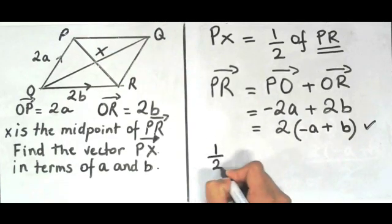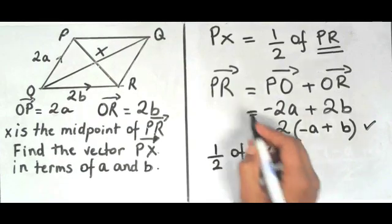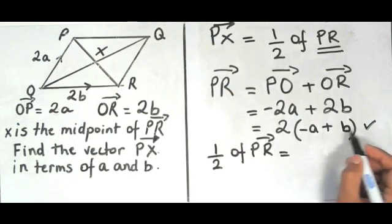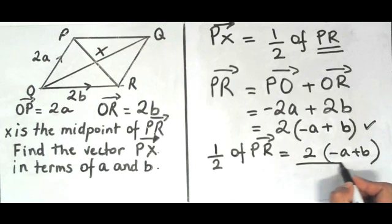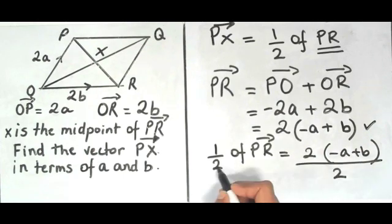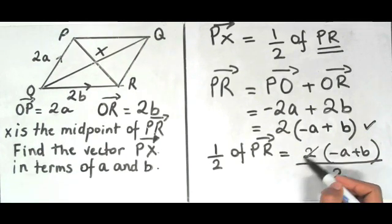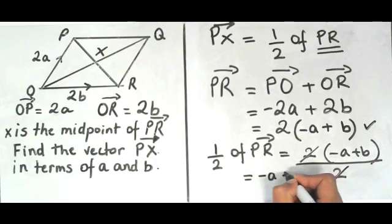So half of PR is going to be this number here. So 2 minus a plus b. And I'm going to divide this by 2 because I want to half it. And as you can see I've got 2 at the top here of my fraction and a 2 at the bottom. So I can just cancel this out because 2 divided by 2 gives me 1. And I'm left with minus a plus b. So my answer is minus a plus b.